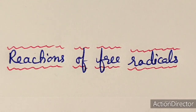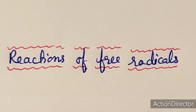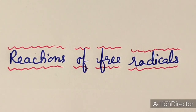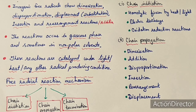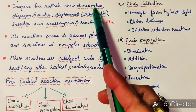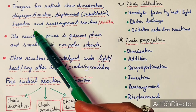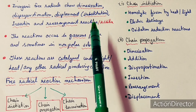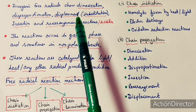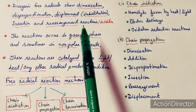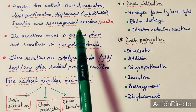In this lecture we will discuss the reactions and kinetics of free radical reactions. The kinds of reactions inorganic free radicals show include dimerization, disproportionation, displacement or substitution reactions, insertion reactions, rearrangement reactions, addition reactions, and subtraction reactions. Free radicals show all these reactions because they are very reactive in nature, having unpaired electrons.